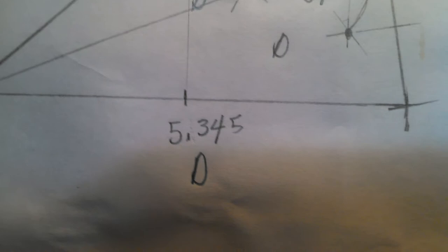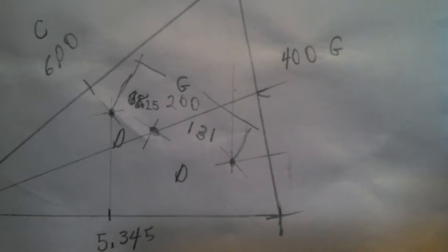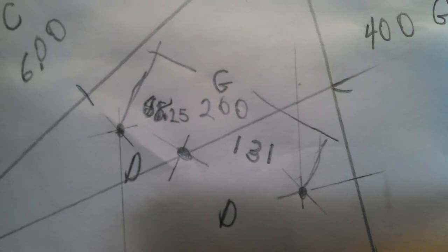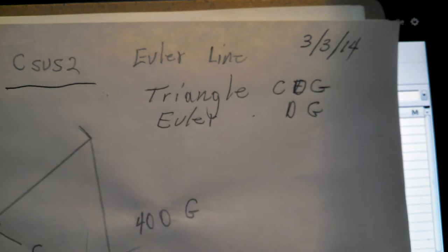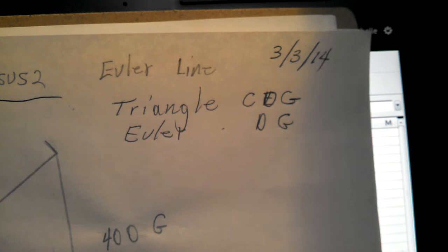So anyway, the Euler line ends up generating for the triangle of the C sus2 chord, the triangle is C, D, G. Those are the notes. I end up with a D and a G in the Euler line. This is really amazing, but they're way up on the higher octaves.